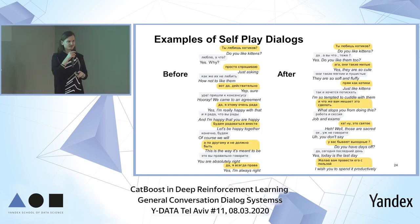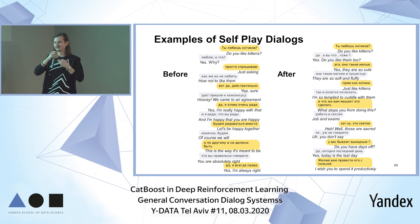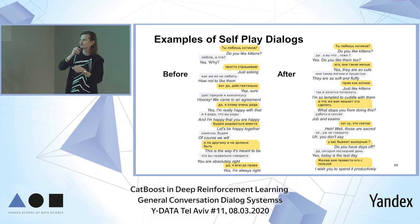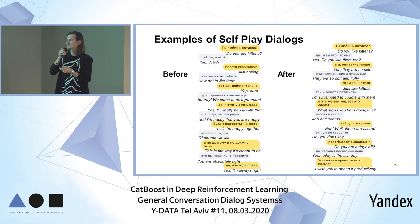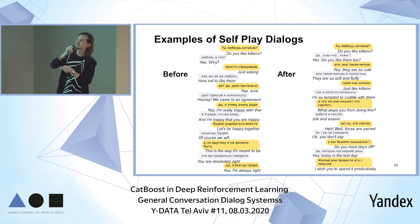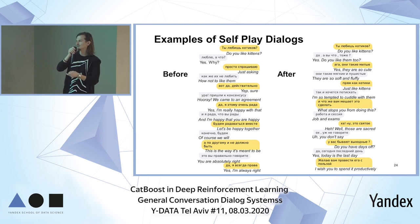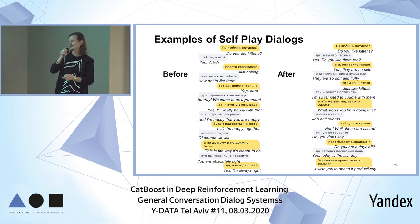We made our model talk to itself on a cluster of machines. At the start of training, the seed utterance 'Do you like kittens?' produces this dialogue: 'Yes, why?' / 'Just asking.' / 'How not to like them?' / 'Yep, sure.' / 'Hooray, we came to an agreement.' / 'Yes, I'm really happy with that.' / 'And I'm happy that you are happy.' / 'Let's be happy together.' / 'Of course we will.' / 'This is the way it's meant to be.' / 'You're absolutely right.' / 'Yes, I'm always right.'